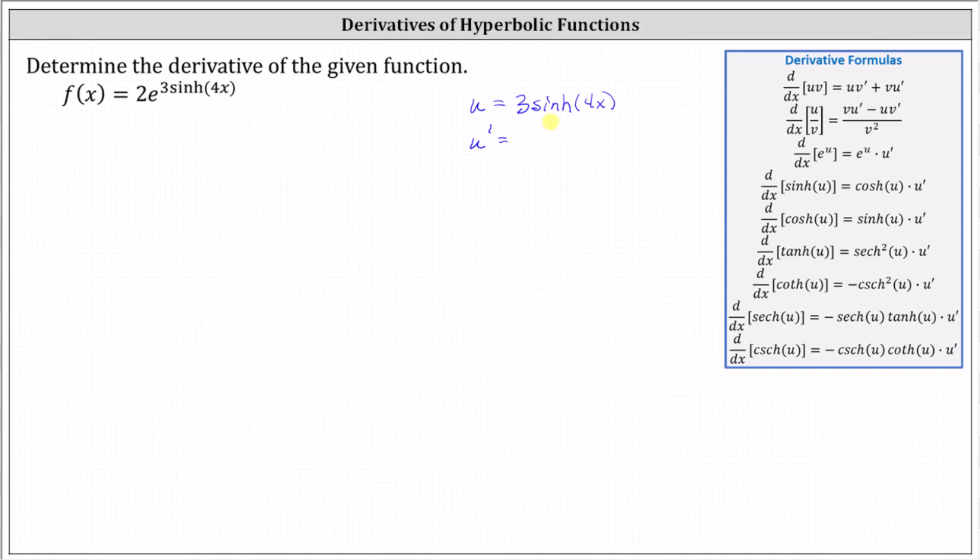The derivative of three hyperbolic sine four x equals three hyperbolic cosine four x times the derivative of four x, which is four. Let's write u prime as 12 hyperbolic cosine four x.